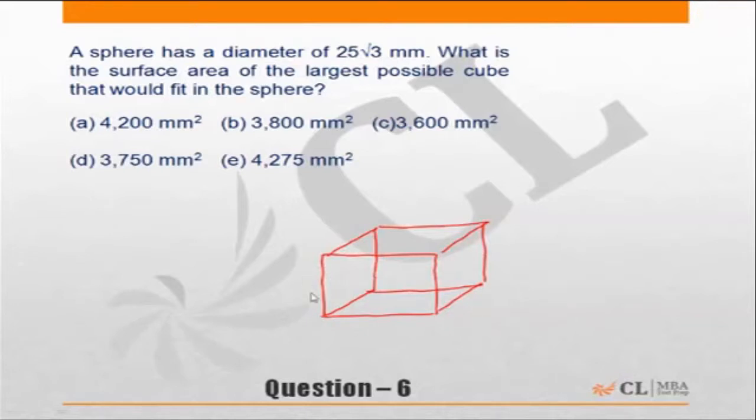So this cube and the sphere which will fit this cube will be something whose diameter will be from this point to this point. That will be the body diagonal of this cube.